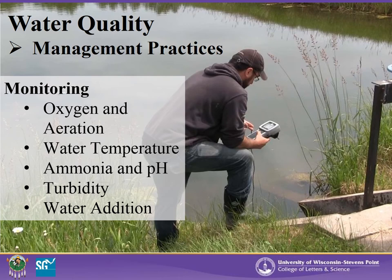Maintaining good water quality within a pond comes with good management practices, which includes regular pond monitoring. The first and most important parameters to monitor are both temperature and oxygen levels within your pond. We recommend daily readings in the morning for temperature and oxygen levels in each pond. The next important parameters to monitor are ammonia and pH levels. Monitoring pond turbidity and water addition as needed are also important practices.